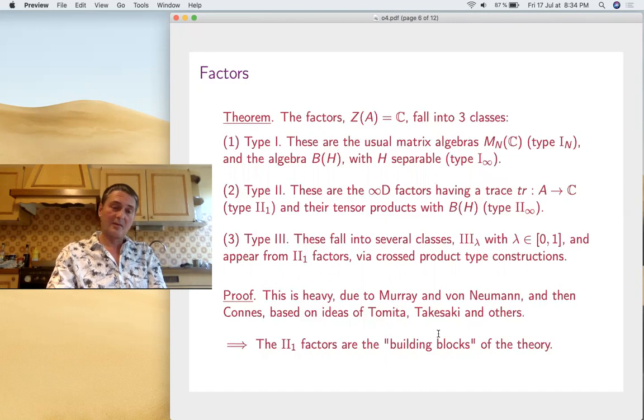And factors now, there's a long story here. They're falling into three classes. Type I, these are M_n(C) or in the limit B(H) itself. Then type II, the interesting case, which are the factors having a trace, type II₁, or maybe the type II₁ tensor B(H), these are called type II_∞. And then type III, which falls in several classes.